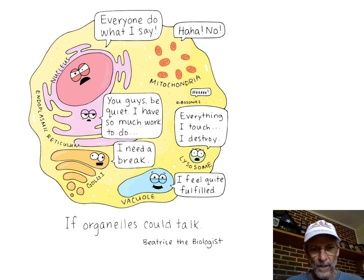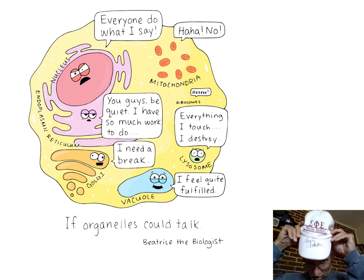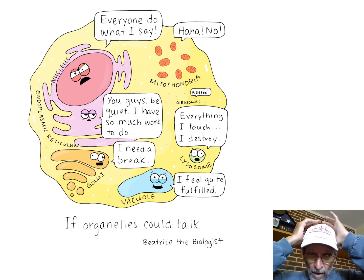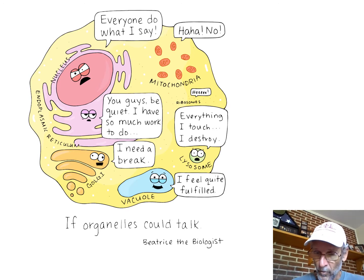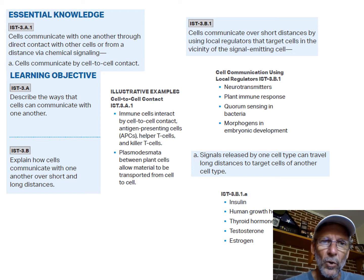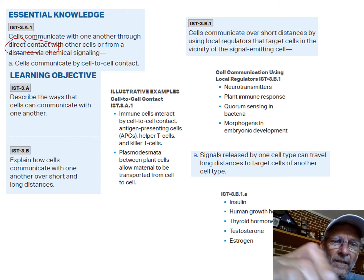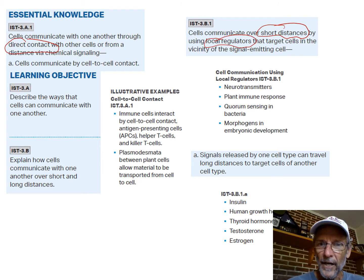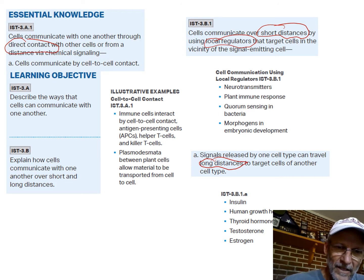So we're going to look at some cell communication stuff. I've divided this up into three or four units, and this one we're going to talk about chemical signaling between cells. Cells communicate by direct contact, by short distance communication using things called local regulators — local means short distance — and then long distance. But all of it has things quite in common.